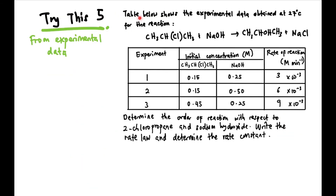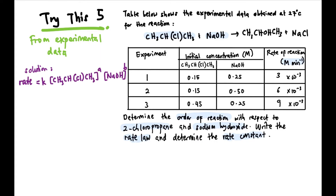Next, try this question. The table shows experimental data obtained at 27 degrees Celsius for CH3ClCH3 plus NaOH producing CH3CHOHCH3 plus NaCl. As usual, this time they also give 3 experimental data sets. Find the order of reaction with respect to 2-chloropropane and sodium hydroxide respectively, write the rate law, and determine the rate constant. First step, write the rate law or expression: rate equals K times concentration of chloropropane to the power of A times concentration of NaOH to the power of B.